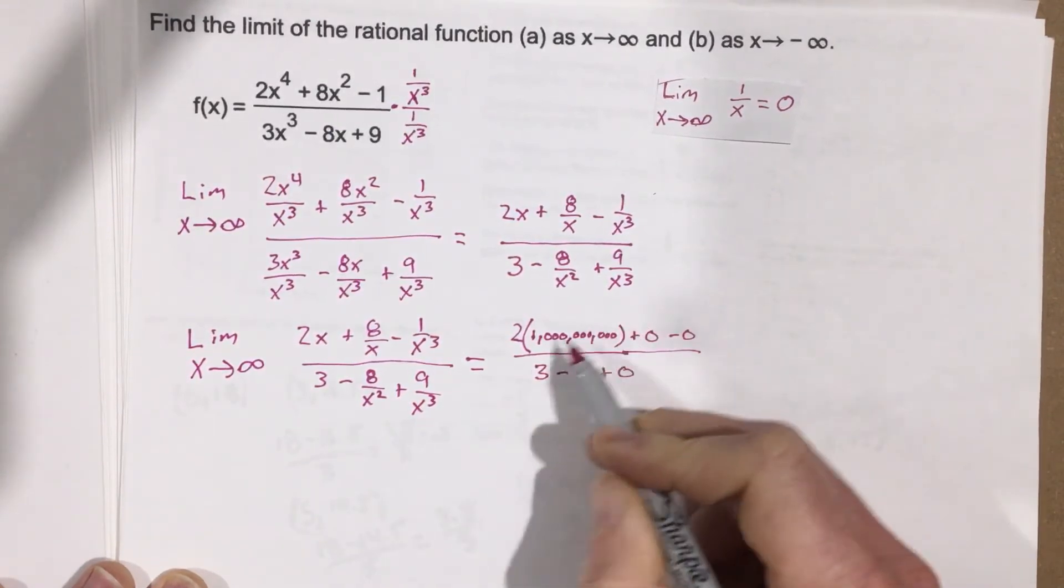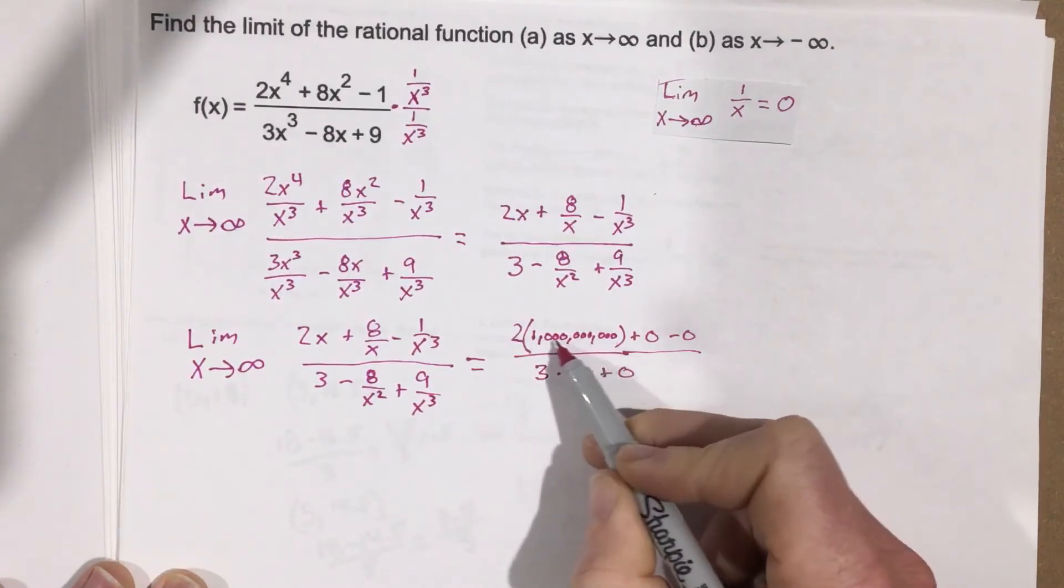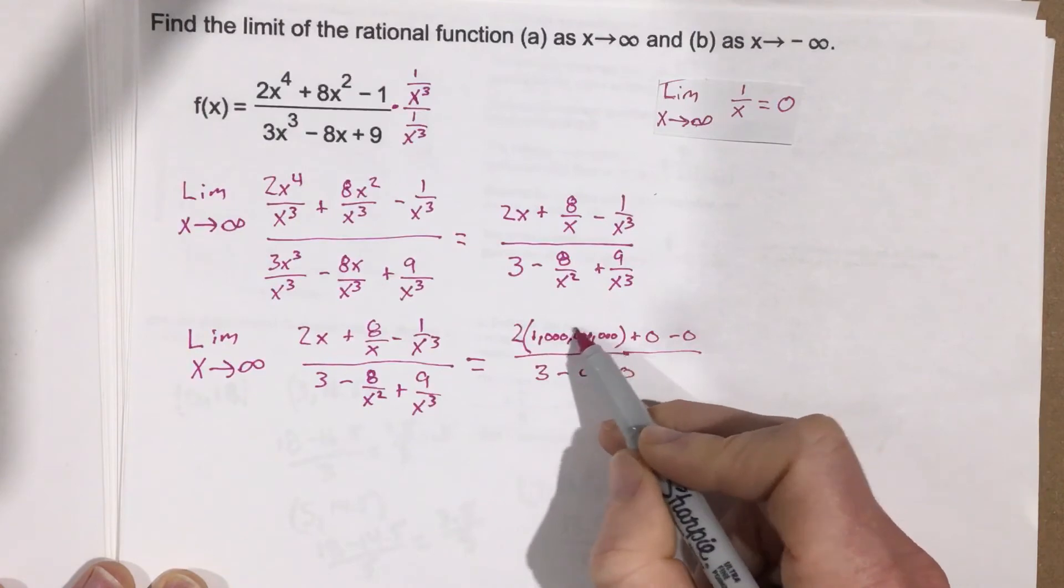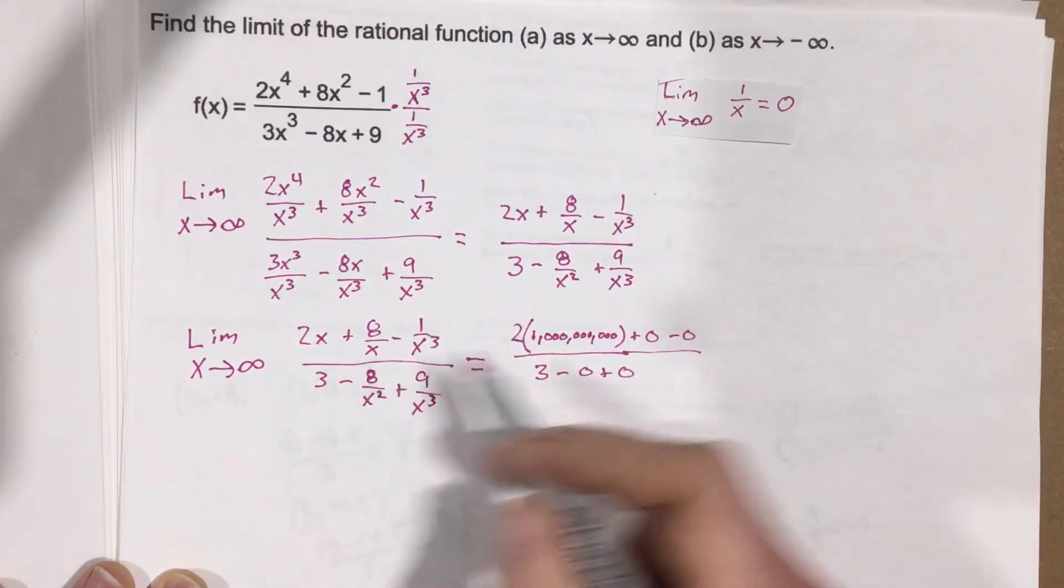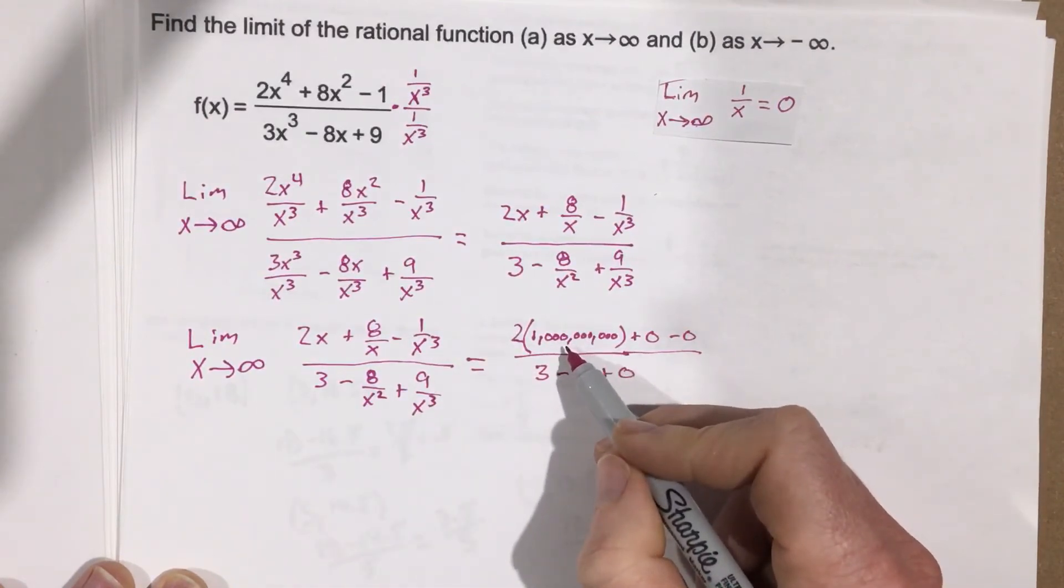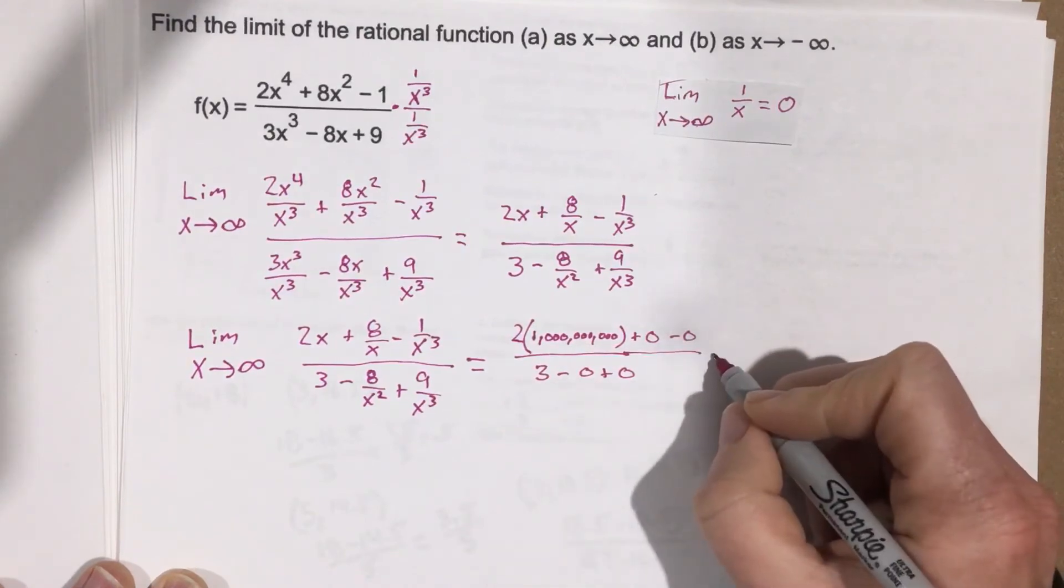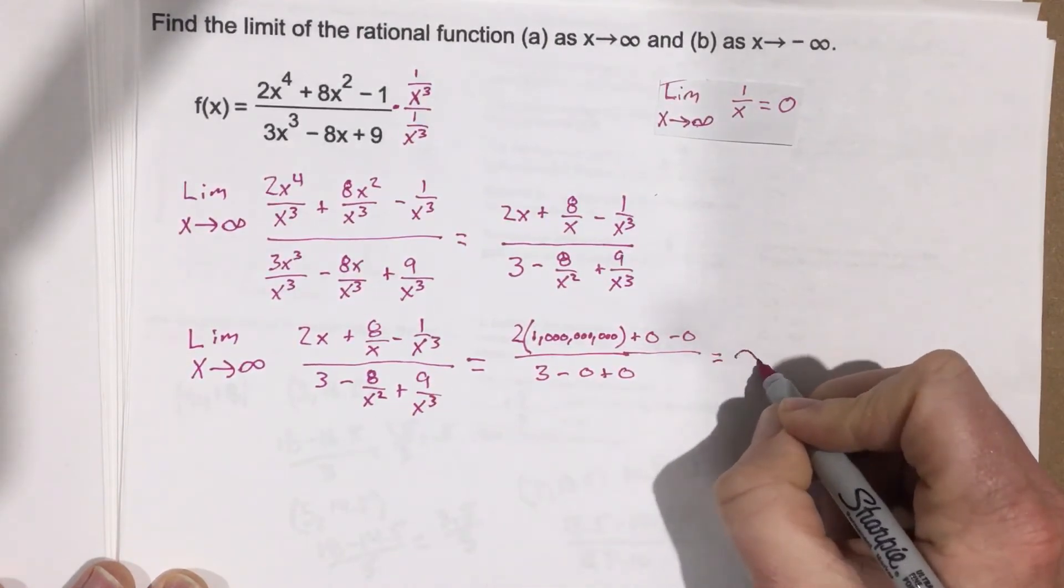So I end up with a really large number on top divided by 3. Well, as I increase this number towards infinity, I'm going to end up getting a larger and larger number. So that means that I am actually approaching infinity.